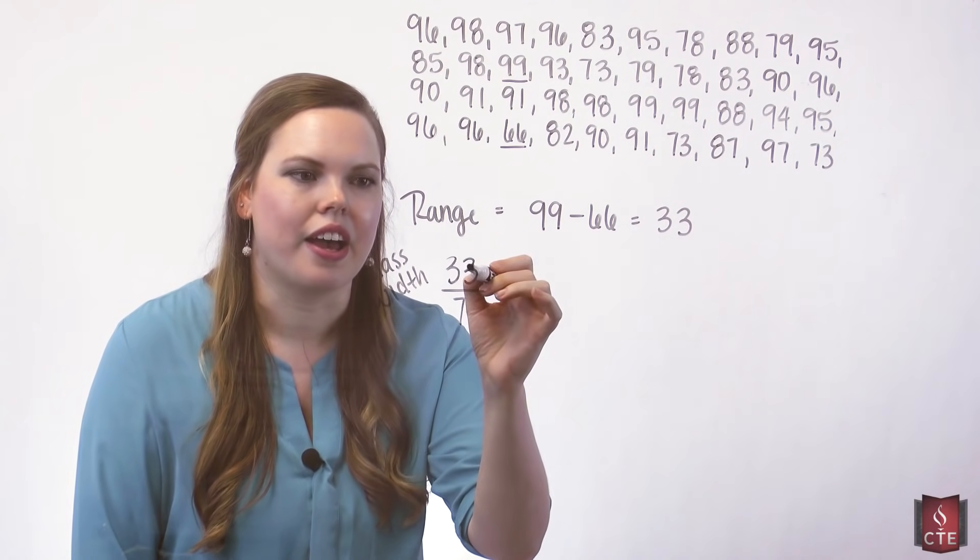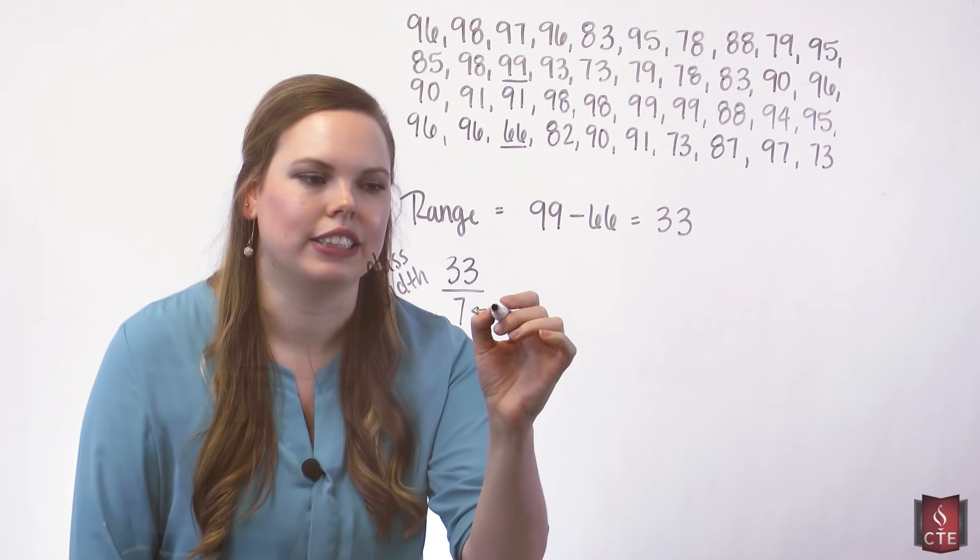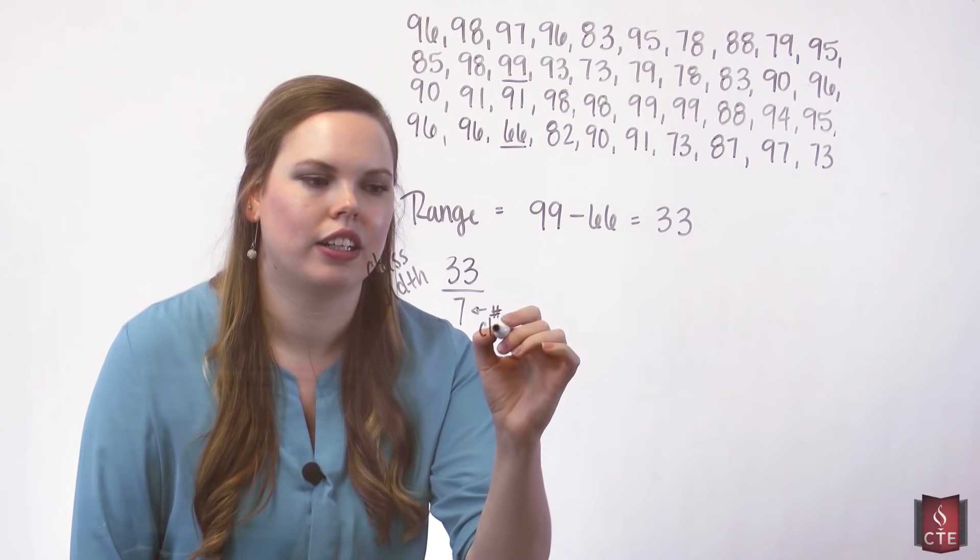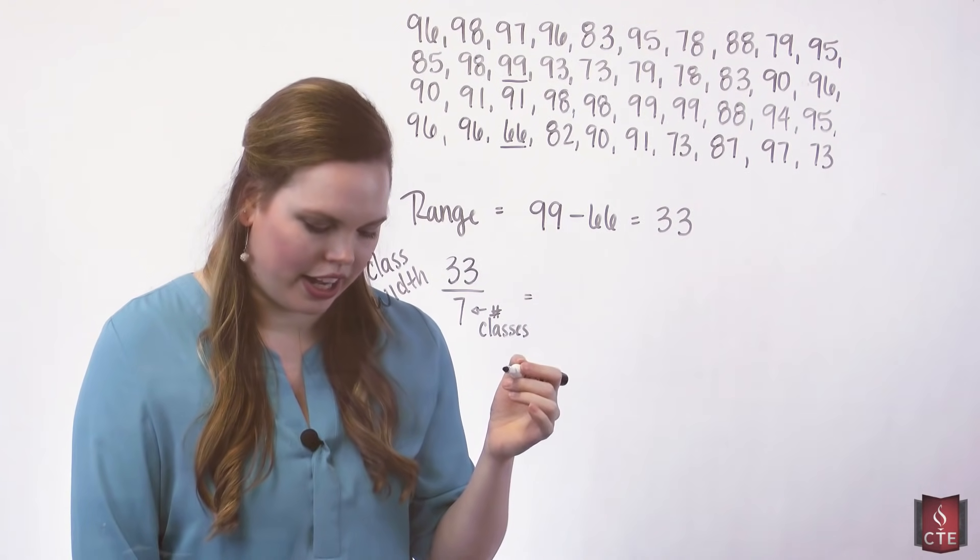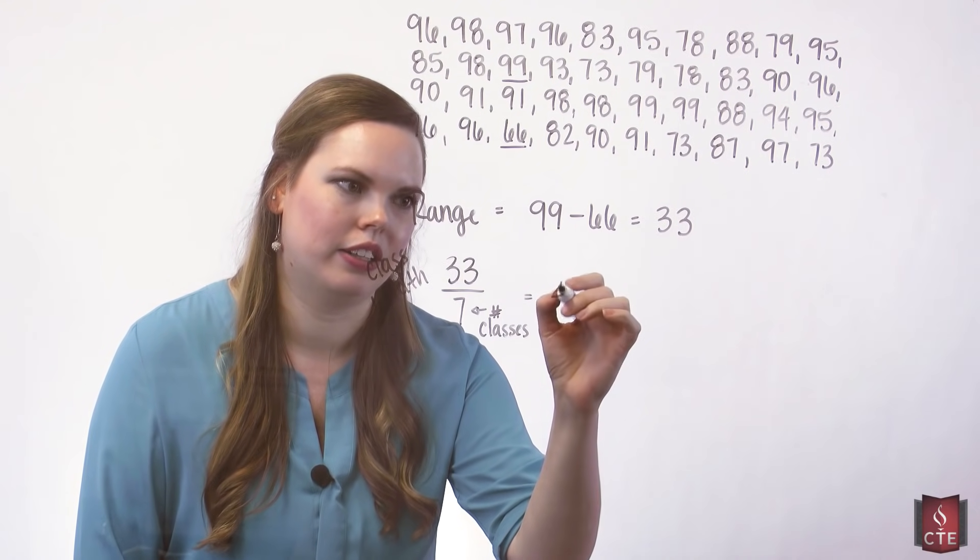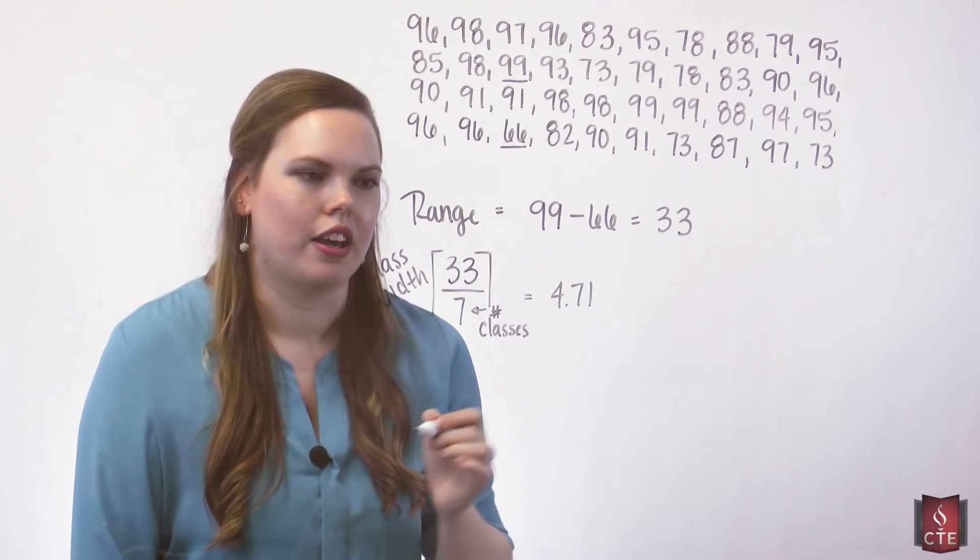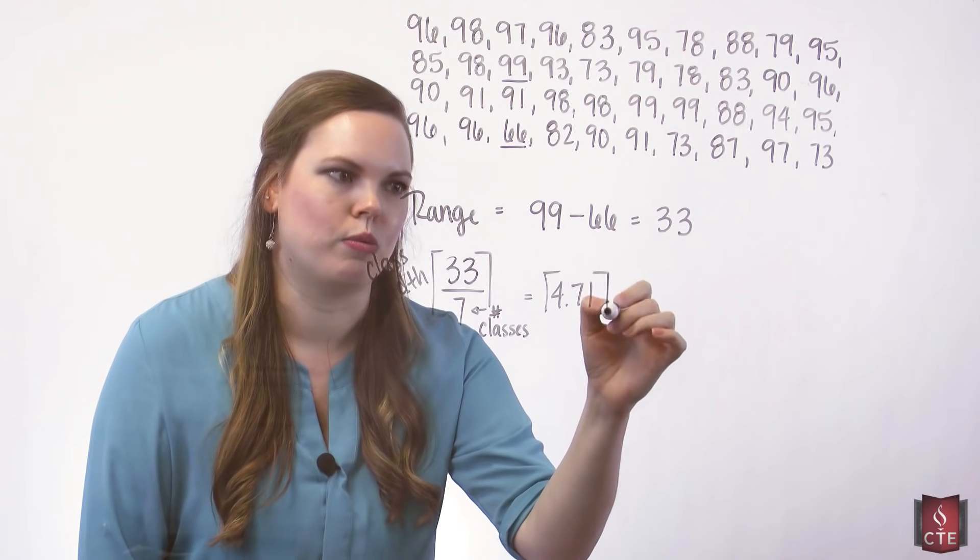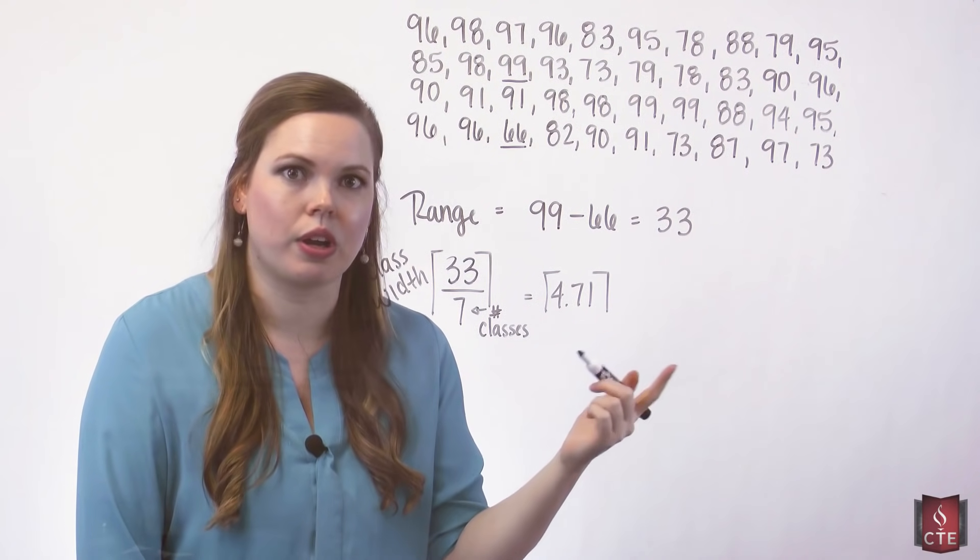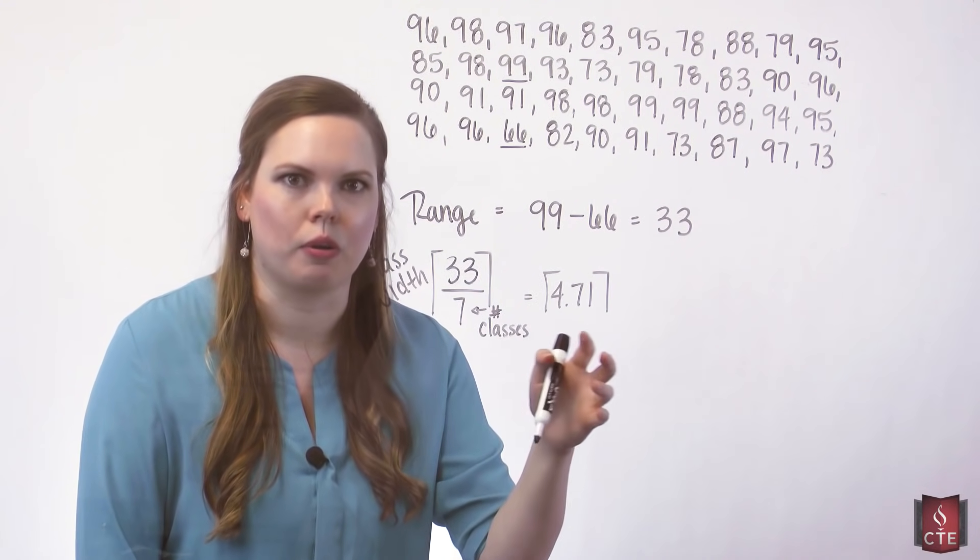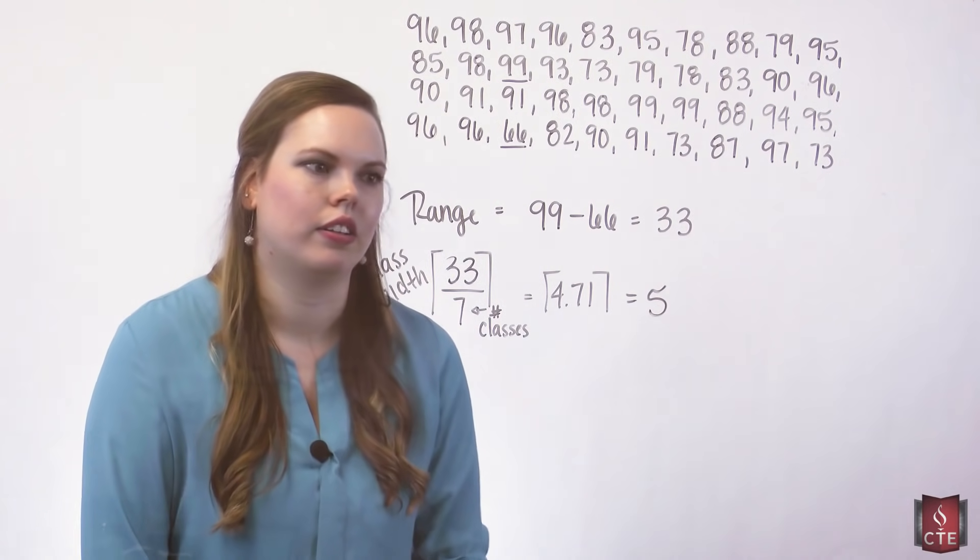You take the range and you divide it by the number of classes that you want. When I did 7, I got 4.71. And a class width, we put a ceiling function on this. The ceiling means to round up the value to the nearest whole number. Always round it up. So even if this was 4.01, we would still round it up to 5.